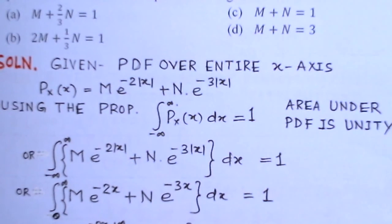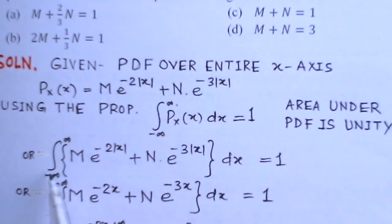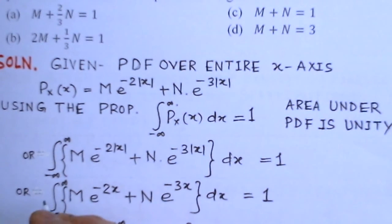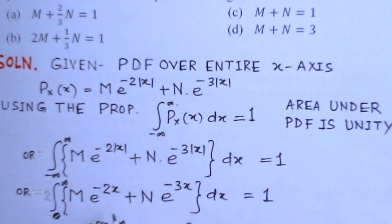Now, the integral is over the entire range from −∞ to +∞, but by symmetry of the absolute value functions, we can write this as 2 times the integral from 0 to infinity of [m·e^(−2x) + n·e^(−3x)] dx.